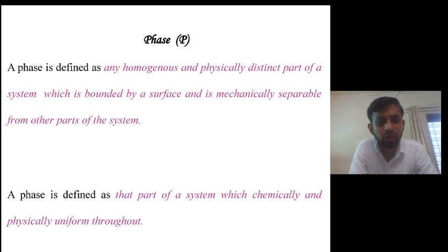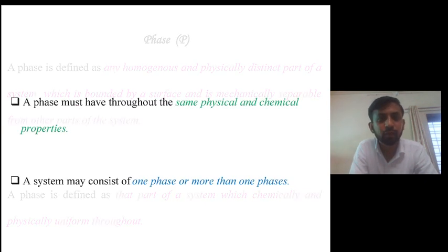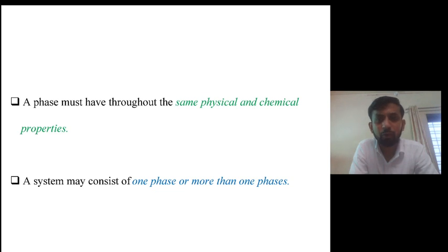In other words we can also define phase as that part of a system which is chemically and physically uniform throughout. We have to remember two important points regarding the phases: a phase must have throughout the same physical and chemical properties, and a system may consist of one phase or more than one phases.